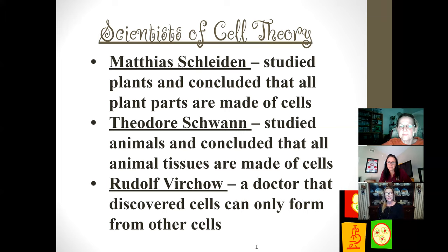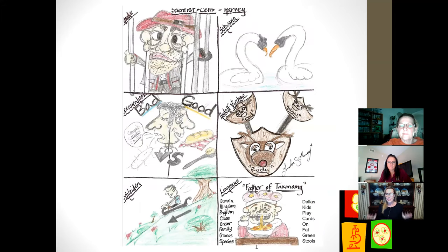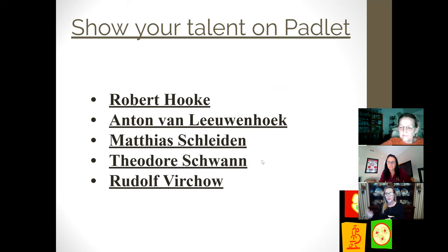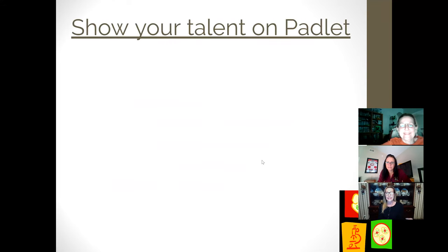Our last scientist is Rudolf Virchow, a doctor who discovered that cells can only form from other cells — they come from pre-existing cells. Looking at this picture, there has to be a dad and a mom; those are the pre-existing cells that come together to form a new life. We have Rudy's dad and Rudy's mom, who came together and made Rudy — just like you were created from your dad and your mom's pre-existing cells.